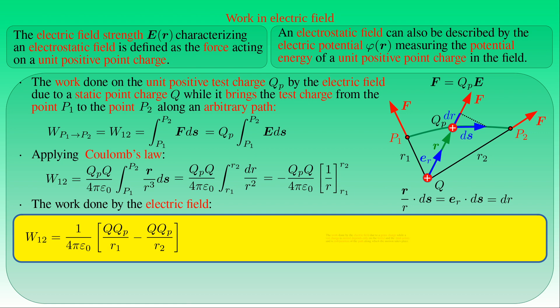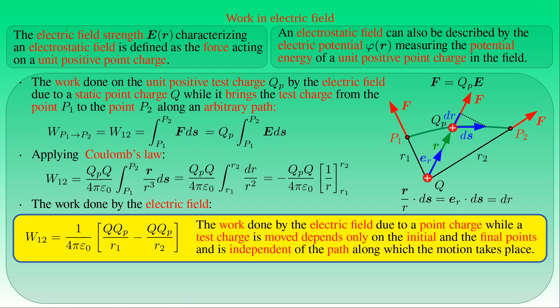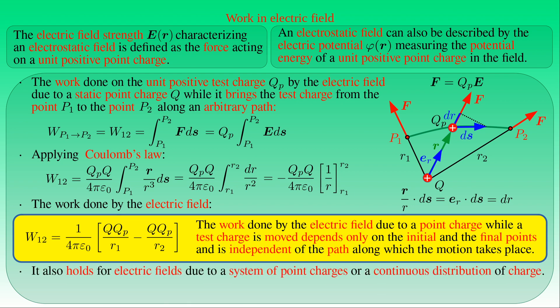This result shows that the work done by the electric field due to point charge Q when bringing test charge QP from one point to another depends only on the initial and final points, and is independent of the path. Due to the principle of superposition of electrostatic forces, this result holds for electric fields produced by a system of point charges or a continuous distribution of charge, provided their configurations are static. If work done by a force depends only on the initial and final points, the force is called conservative.